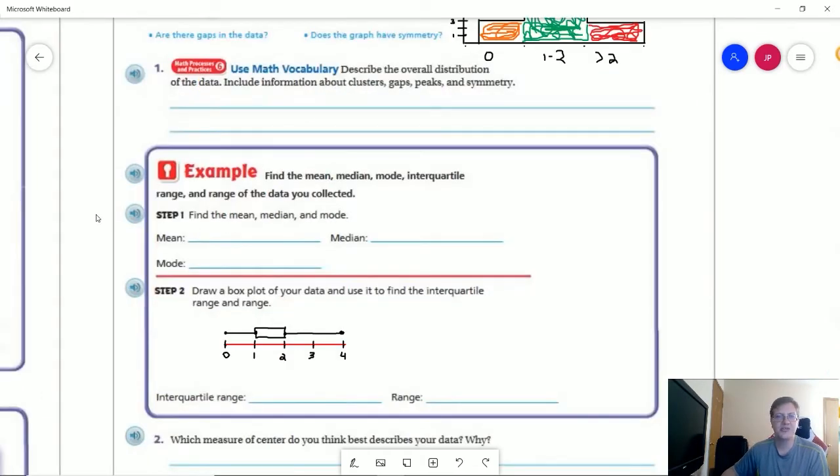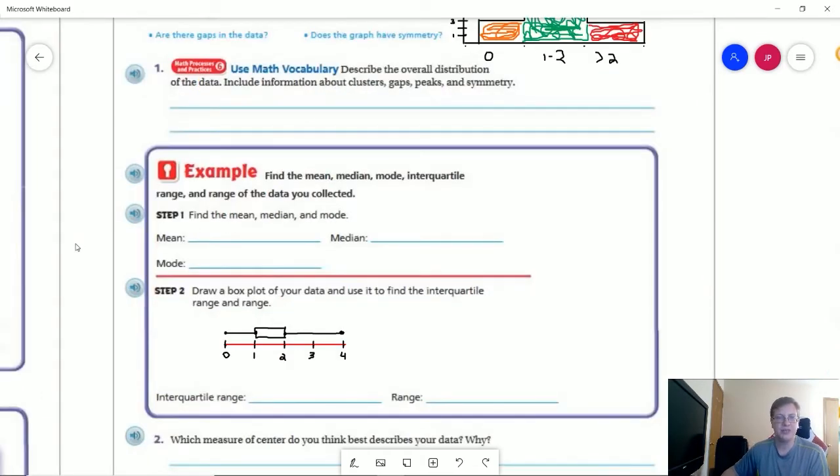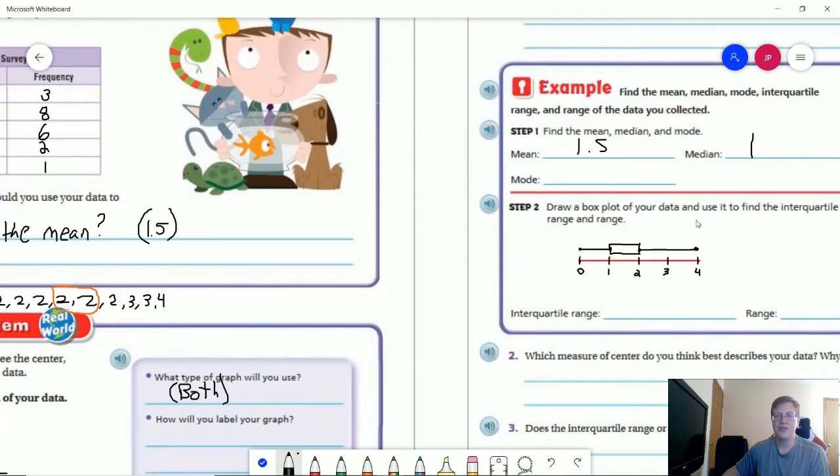The next thing they want us to do is find the mean, the median, and the mode. My center between my 10th and 11th data point is right here. I would take the average of both of these and that's going to give me a median of one. And my mode, my most frequently repeated number, would be one.